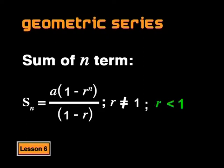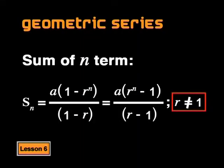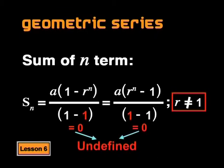We can also write this as S_n equals a times (1 minus r to the power n) all divided by (1 minus r). The two forms have the same value. It is useful to use the second form when r is smaller than 1, and the first when r is bigger than 1, to avoid negative numbers in the denominator. This formula assumes that r is not equal to 1, because if it were we would get a denominator of zero, which is undefined.